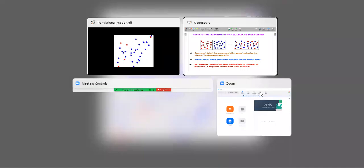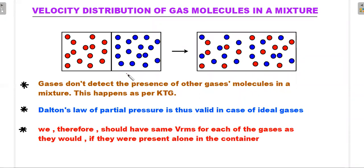The force that this particular gas molecules apply on the wall is as good as what it would if the gas was present alone in the container. That means we can conclude that each of these gas molecules will have their own Maxwellian distribution of velocities independent of the presence of the other at that given temperature. We therefore should have the same vrms for each of the gases as they would if they were present alone in the container. If this entire gas container had only red molecules, then the rms speed of red molecules alone would be root 3RT divided by m1. Similarly for the blue one it would be root 3RT divided by m2. Their own rms speeds individually won't change because of the presence of the other.